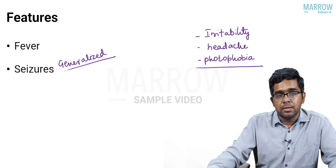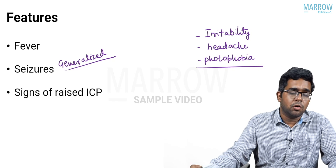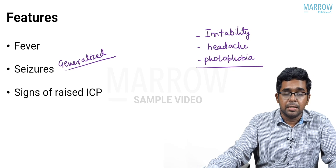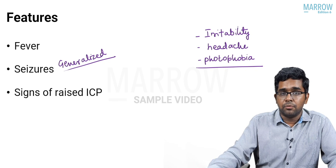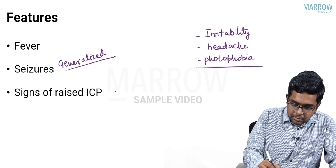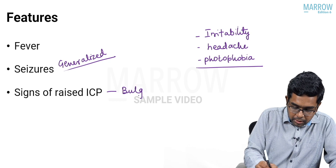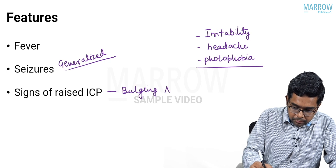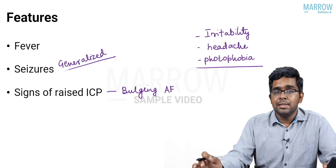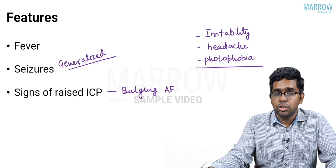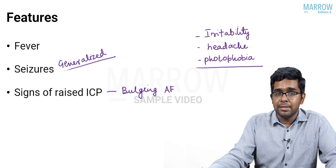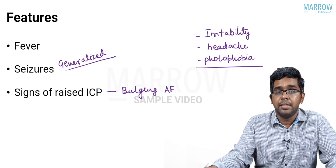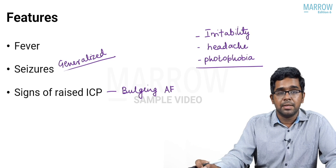In addition, they can also have signs of raised intracranial tension. The important sign of raised ICT to look for in a young child is bulging of the anterior fontanelle. The classical teaching is that a young child of less than one year with high-grade fever, high irritability, and bulging anterior fontanelle — you have to suspect meningitis.